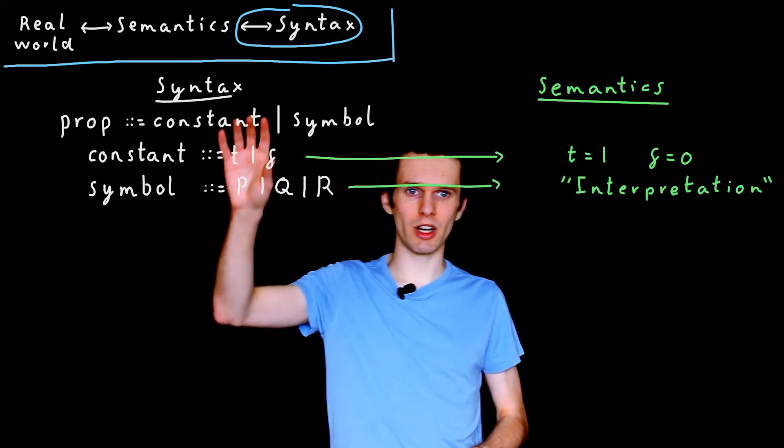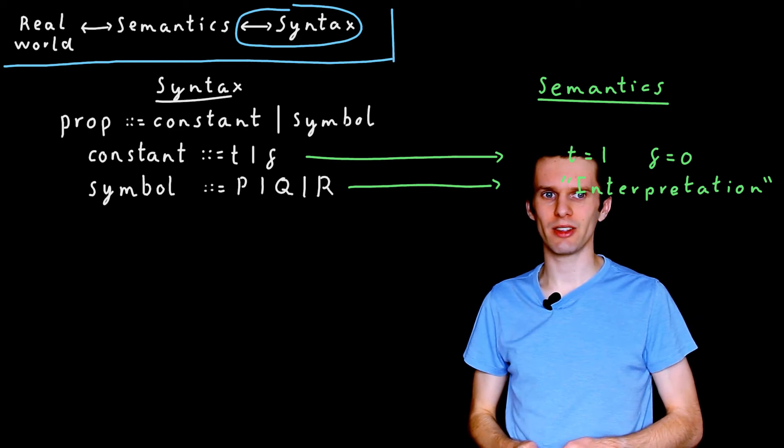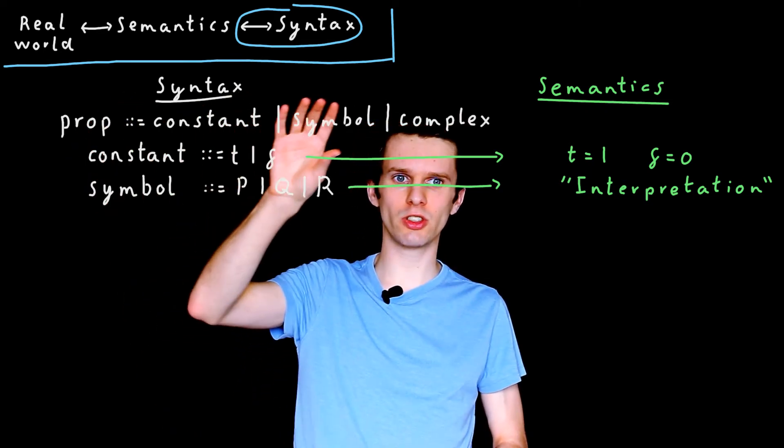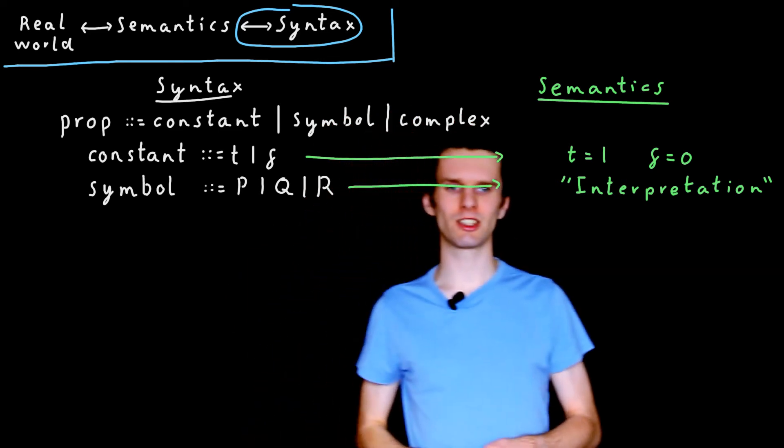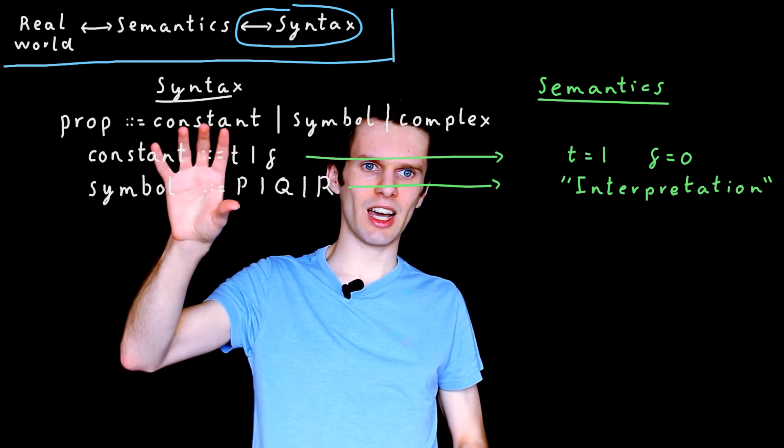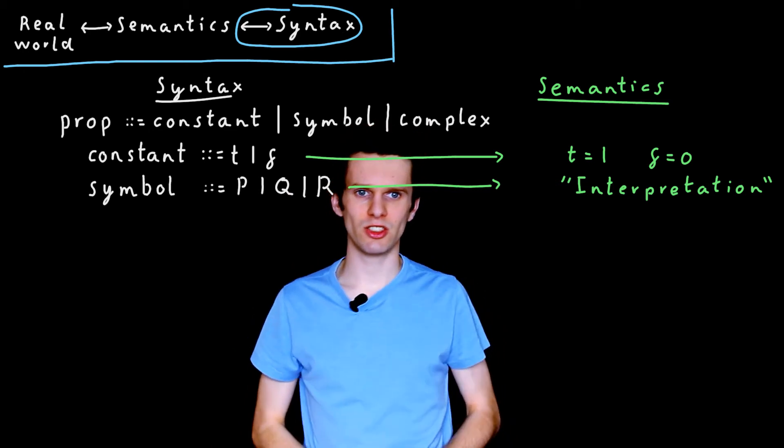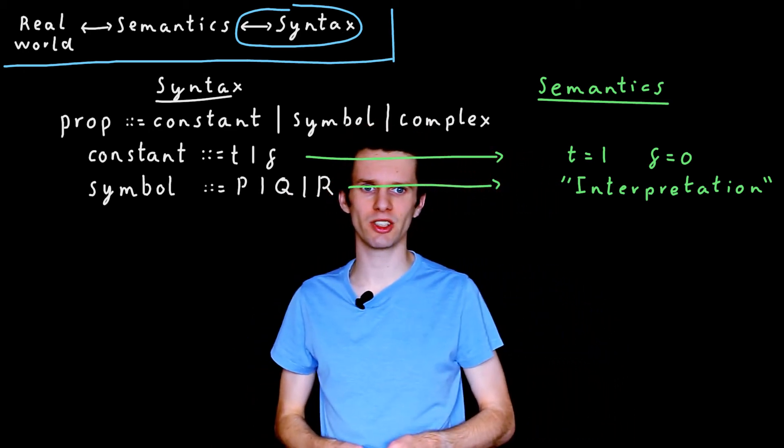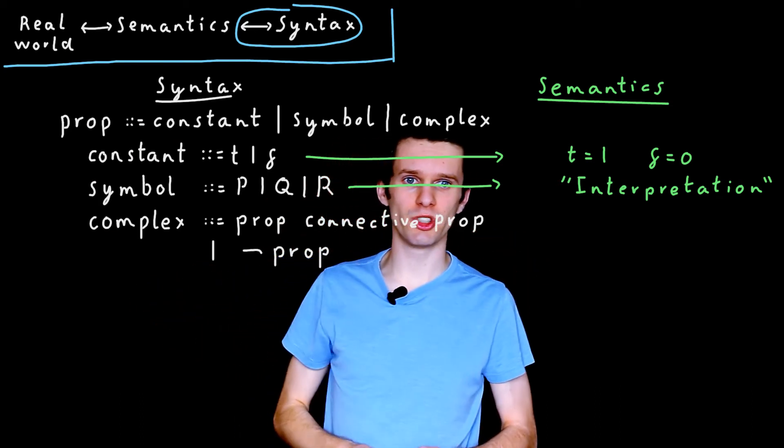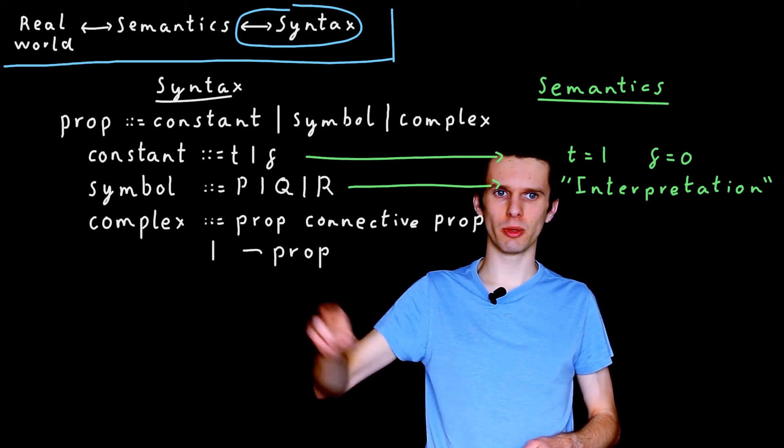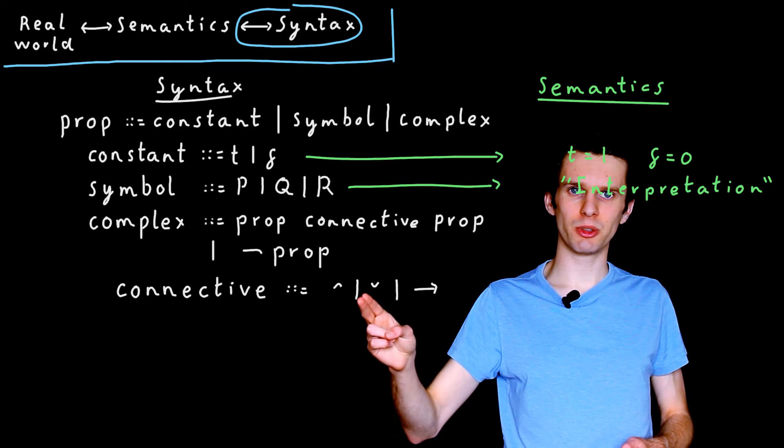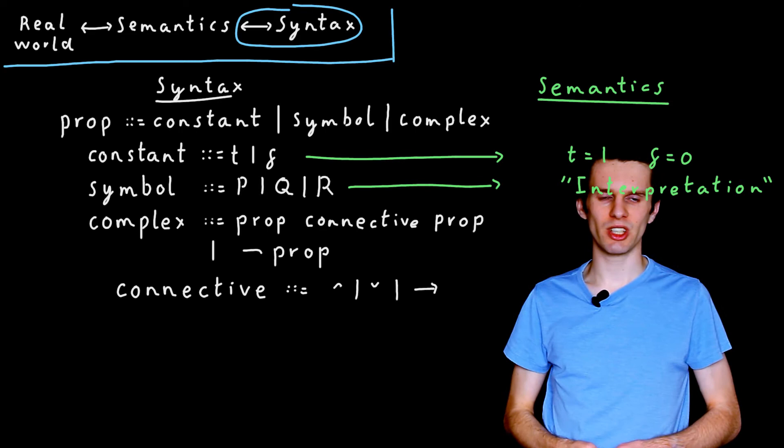So we've expanded our syntax a bit. We can now write constants and symbols, but we want to be able to combine them together using connectives, things like AND and OR. And so once again we extend what a proposition can be. It can still be a constant, it can still be a symbol, but now it can also be a thing we call a complex. And actually you'll see various different terms and notations for these things. There isn't one standard absolute notation for constants, symbols, and complex sentences. So what are we defining a complex sentence to be? Well, we're saying it can either be a proposition followed by a connective and another proposition, or it can be the NOT symbol followed by a proposition.